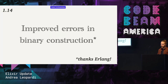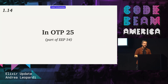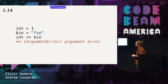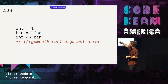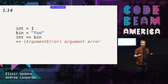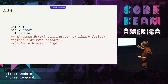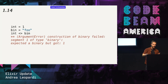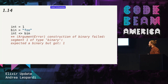Last but not least, we have improved errors in binary construction, which is really something Erlang did — we get it for free by using Erlang underneath. This came out in OTP 25. Before, if you tried to concatenate an integer in a binary, you'd get a really hard-to-understand argument error. Now it gives you a lot more information — it tells you the first part is an integer, not a binary, while the second part is a binary. Thanks to Erlang, because we didn't really do much.